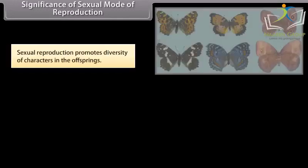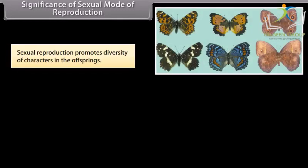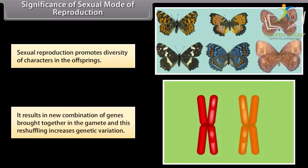Significance of sexual mode of reproduction. Sexual reproduction promotes diversity of characters in the offspring. It results in new combination of genes brought together in the gamete and this reshuffling increases genetic variation.